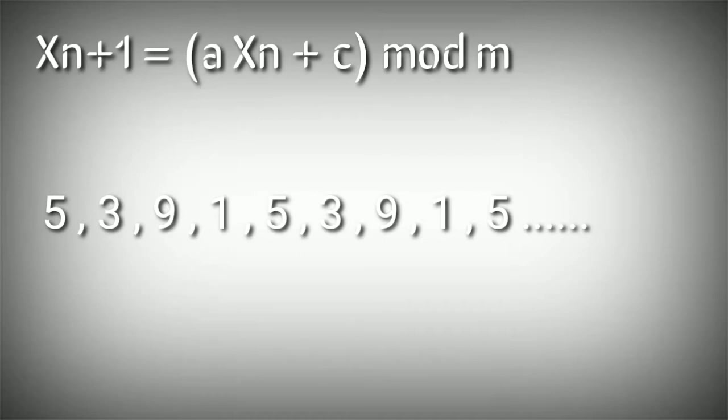The number of terms after which the random numbers start repeating themselves is known as the period of that series. In our case, the period of our series is 4. Because after 4 terms, 5, 3, 9, 1, the numbers repeat themselves: 5, 3, 9, 1.